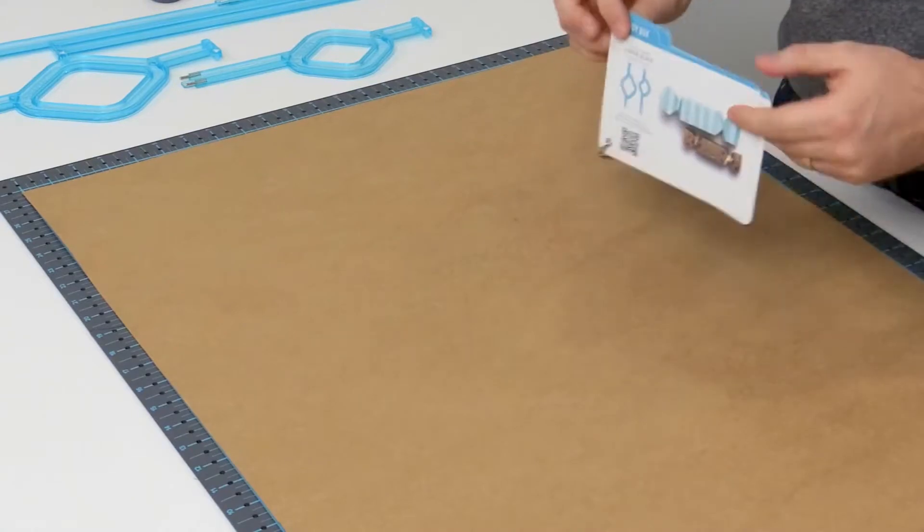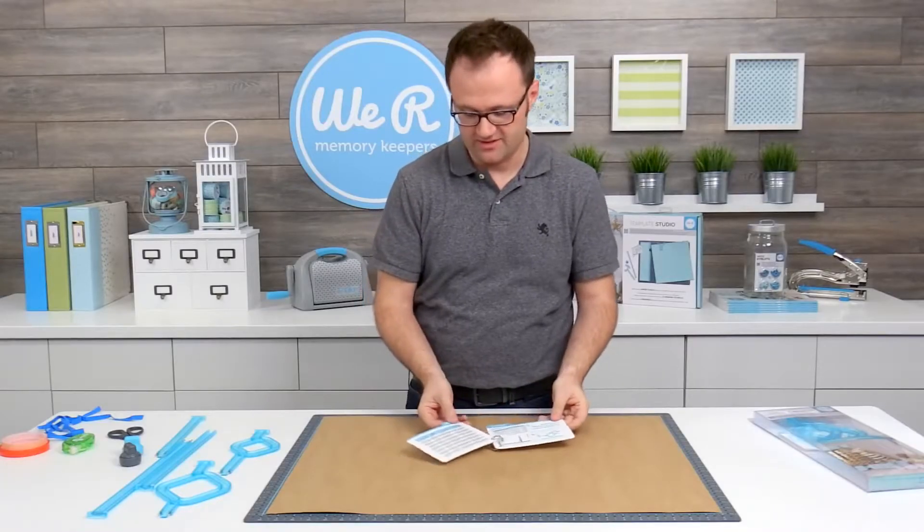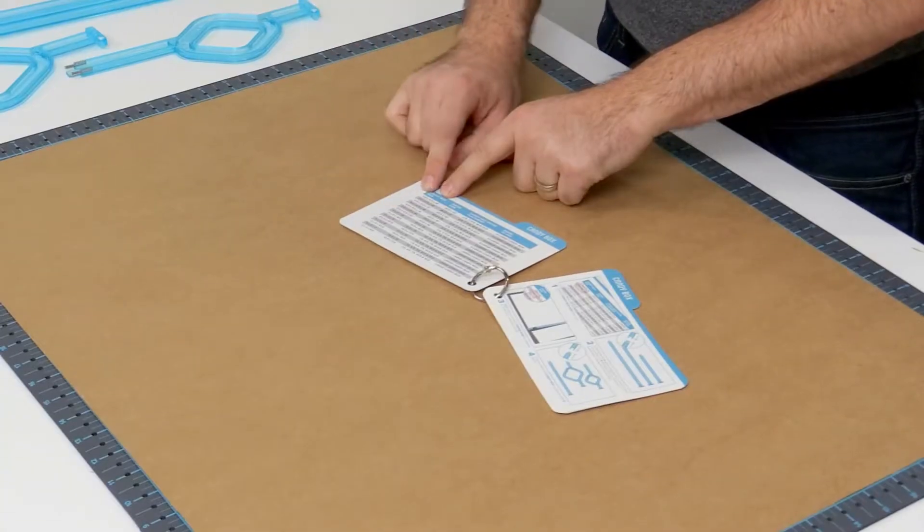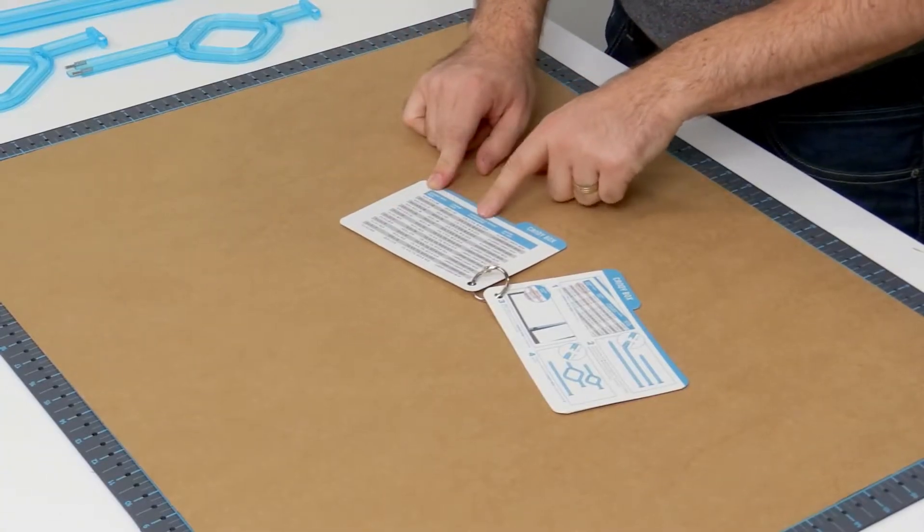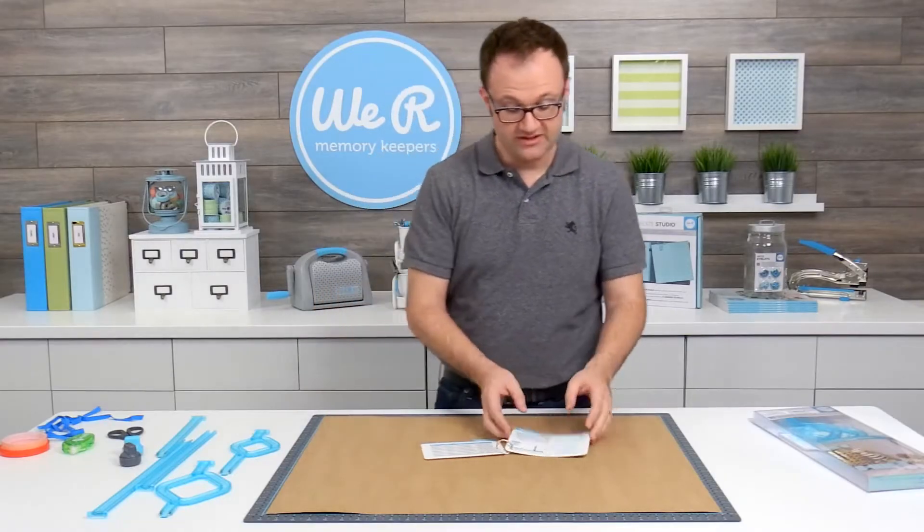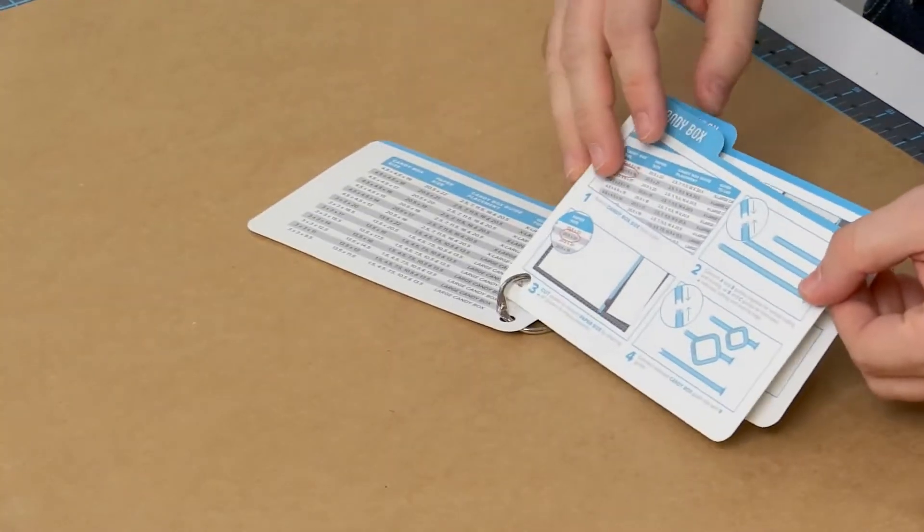Your candy box template guide comes along with these instructional recipe cards. The cards have all of these different sizes that you can make, as well as all of the different measurements that you need to align your guides and the size of paper you need to cut down to. We also have a set of step-by-step instructions that you can follow, which I will be going through with you right now.